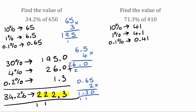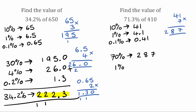We're now going to find the multiples of these that we need. Looking at 71.3%, in our tens column we need 70%. So we take our 10% value of 41 and multiply by 7: 7 times 1 is 7, and 7 times 4 is 28. So 70% is equal to 287. In our units column we need 1%, and we've already figured that out — 1% is equivalent to 4.1.